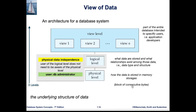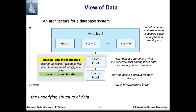The logical level contains information about data types — whether it is a string, date, or number — and the structure. The different columns that are part of a relation are defined at the logical level. There is a concept called physical data independence, meaning regardless of how the data is stored physically, it should not affect the logical level.